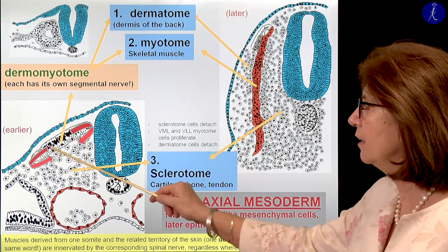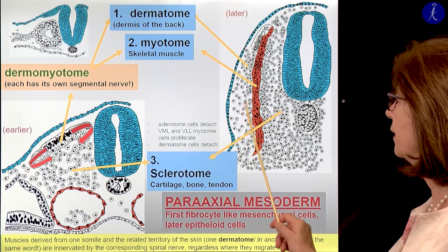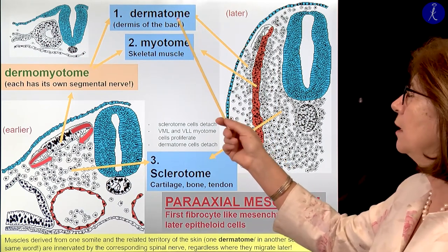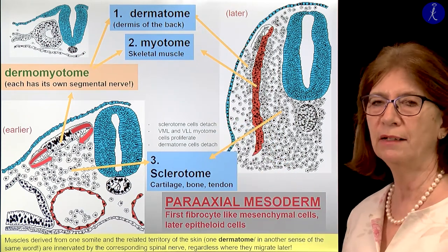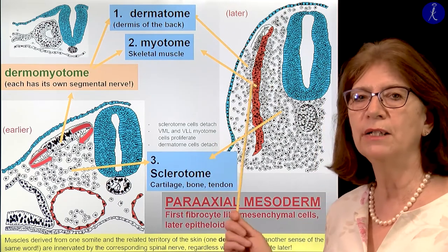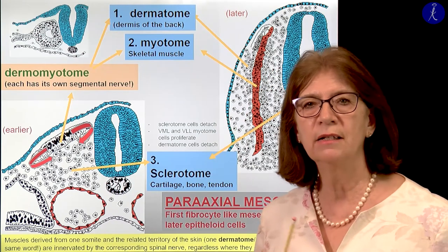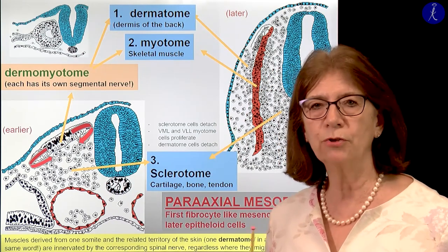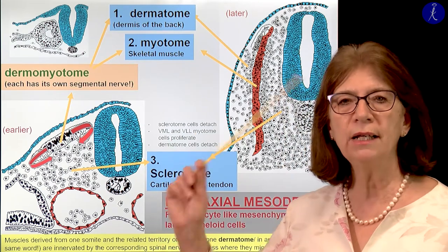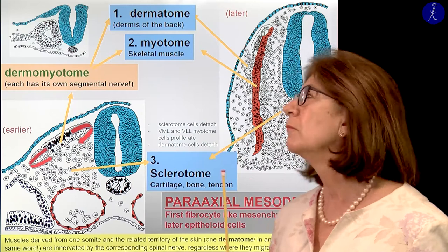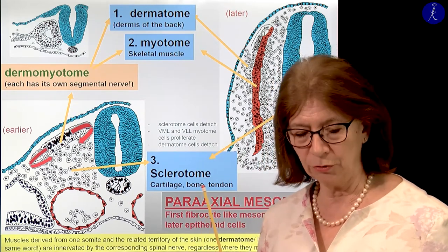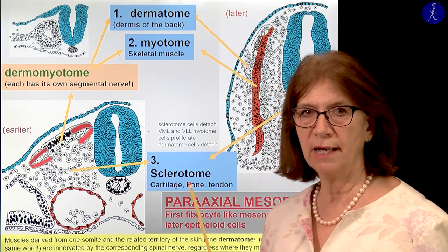The cells in the middle of the dermomyotome detach and will become connective tissue-like cells; these will give the dermis of the back — the connective tissue layer of the skin. These cells give the histological dermis and also the underlying connective tissue — subcutaneous connective tissue — but only in the back region, in those territories which are innervated by the dorsal branches of the spinal nerves.